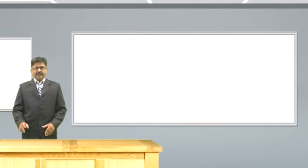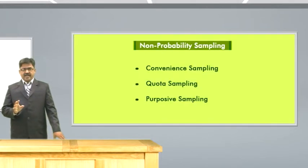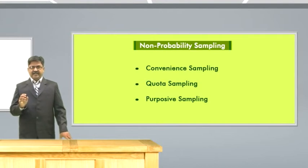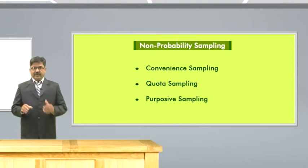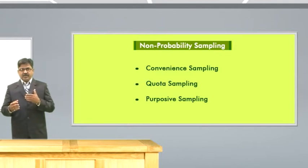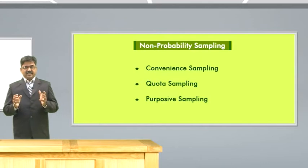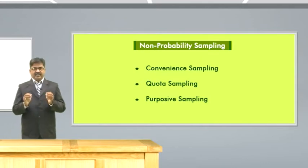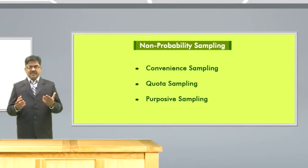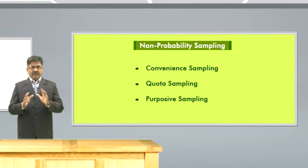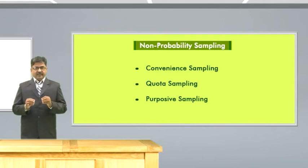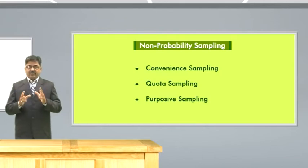Under non-probability sampling, one of the sampling methods is convenience sampling. As the term suggests, convenience sampling is done at the convenience of the researcher — that means whoever comes across you, you will just take that as a sample and take the data from that person. We cannot ascertain what is the probability of an individual to be selected as a sample. Therefore, we cannot rely too much on this kind of results. However, you will get a broad idea about the results. This is done because it will save a lot of your time and money.